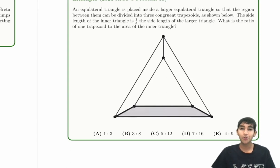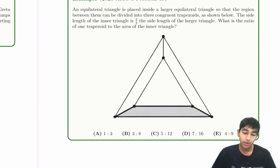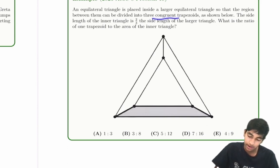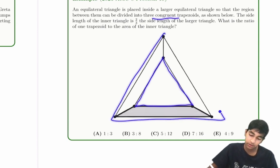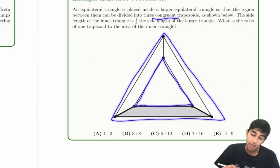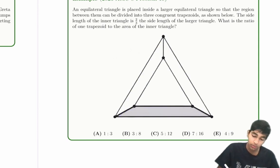Let's explore how to solve this cool equilateral triangle problem. An equilateral triangle is placed inside a larger equilateral triangle, so that the region between them can be divided into three congruent trapezoids. We've got this small equilateral triangle and this big equilateral triangle, and the region between them is divided up into three trapezoids like this.